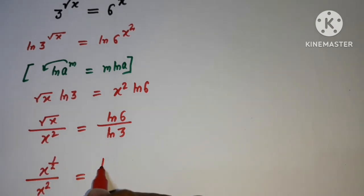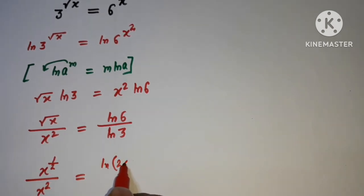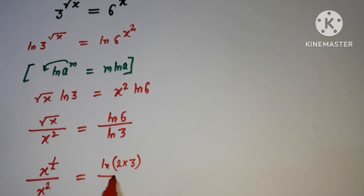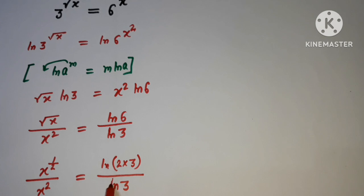Now 6 can be written as 2 times 3, so we can factorize: ln 6 becomes ln 2 plus ln 3, and this is divided by ln 3.